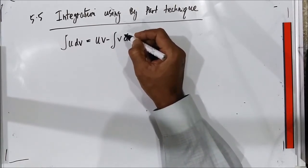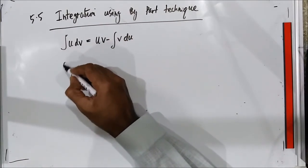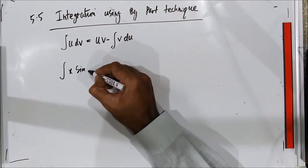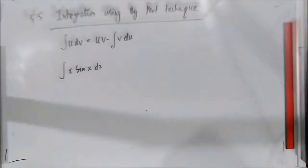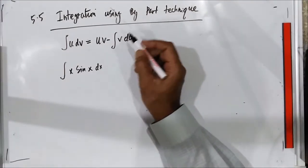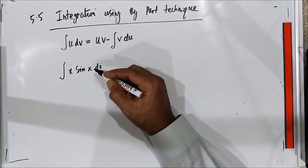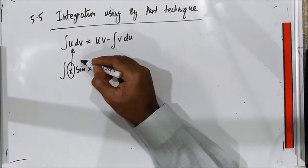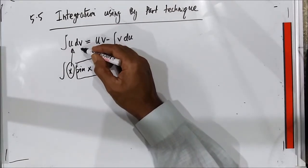Let's take one example. I want to find the integral of x sin(x) dx. Comparing with the formula, the integral of u dv equals uv minus the integral of v du. I can set u equal to x, and dv equal to sin(x) dx.